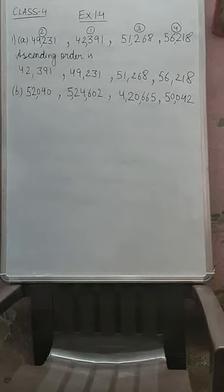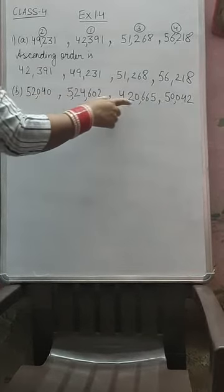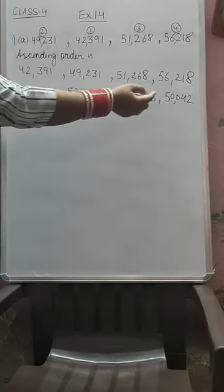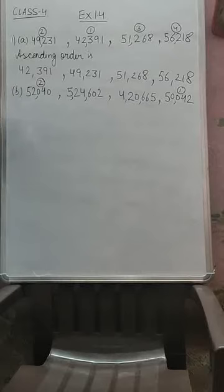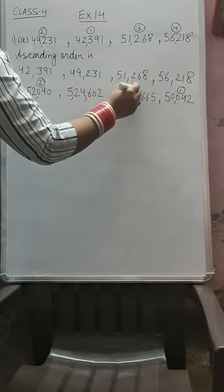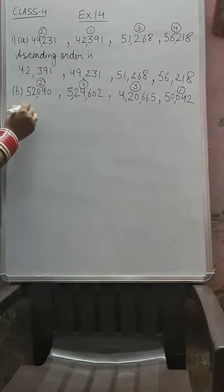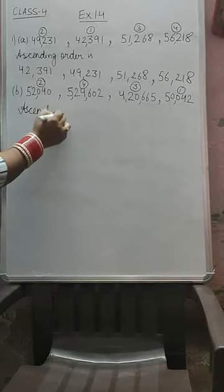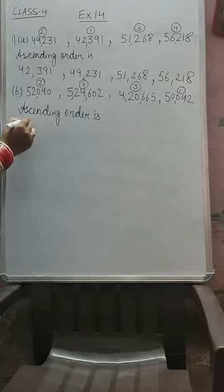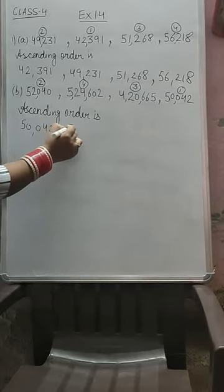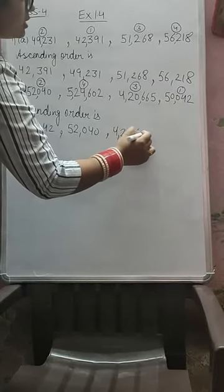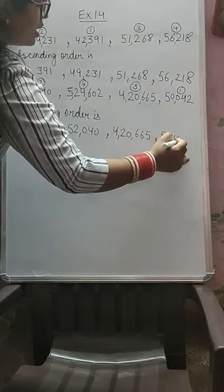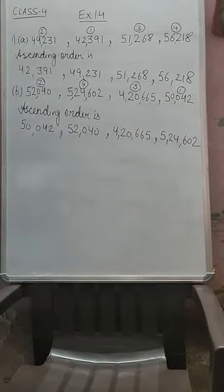Now we will see which one is the smallest. This is 52,000 something, 5,00,000 something, and this is 50,000 — these are 5-digit numbers. We compare: obviously 50,042 is the least. This comes first, then 52,040. This is 4,00,000 something and this is 5,00,000 something — obviously 4,20,665 is smaller. So ascending order is: 50,042 then 52,040, then 4,20,665, and last 5,24,602.